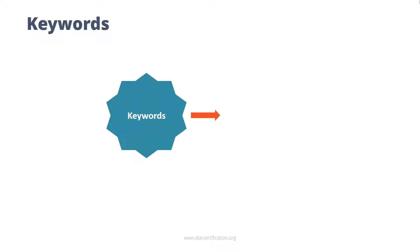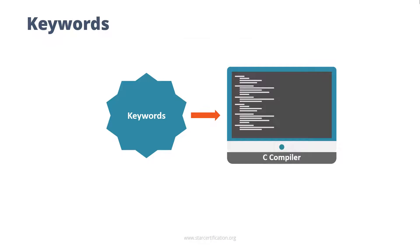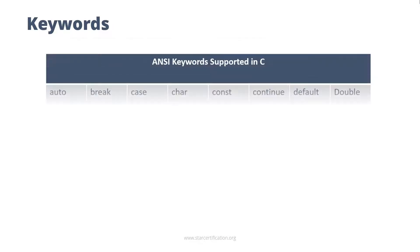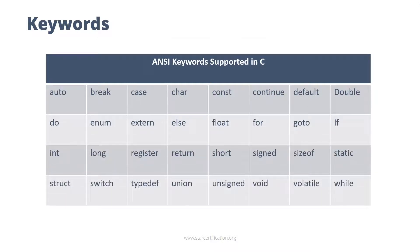Keywords are terms that are already defined in the C compiler. These are also known as reserved words. As a good practice, do not use keywords as a variable name or identifier. There are 32 keywords in C language, and they are shown on the screen.